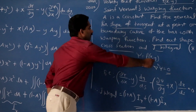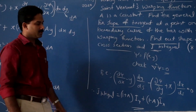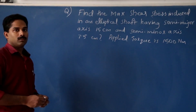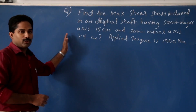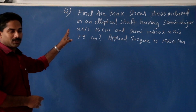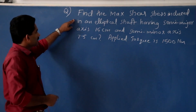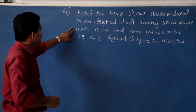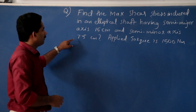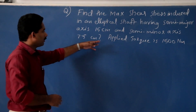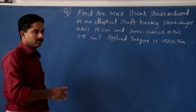So this is the fourth part of the answer. Now, the next question is a numerical problem on maximum shear stress: find the maximum shear stress induced in an elliptical shaft having semi-major axis 15 cm and semi-minor axis 7.5 cm, with an applied torque of 1500 N·m.